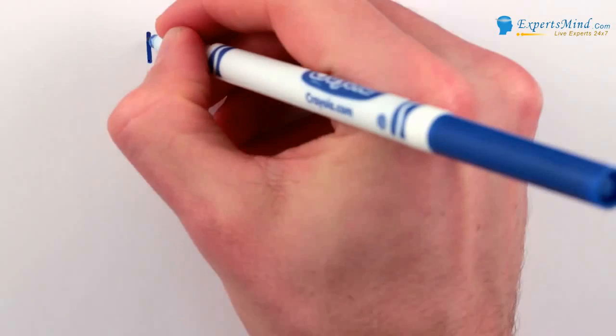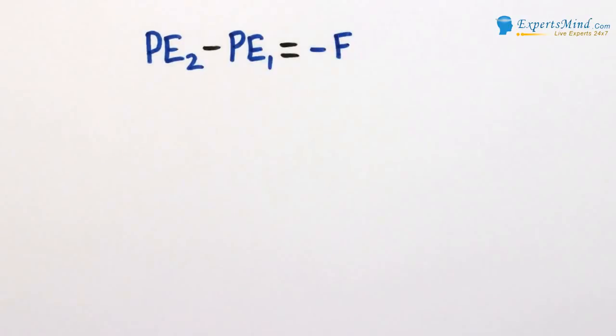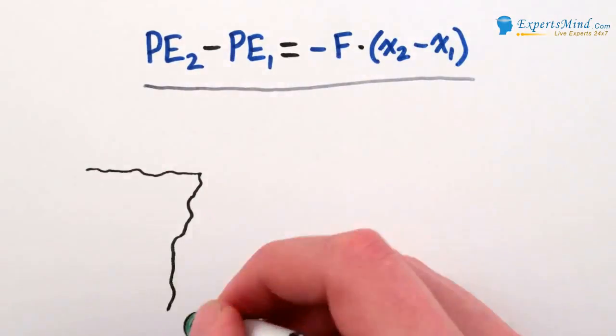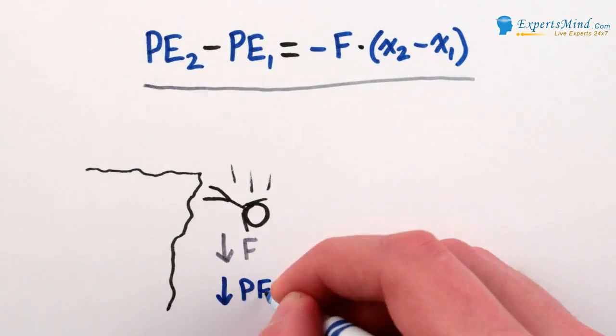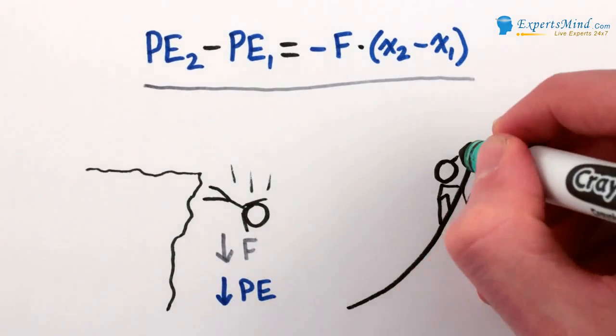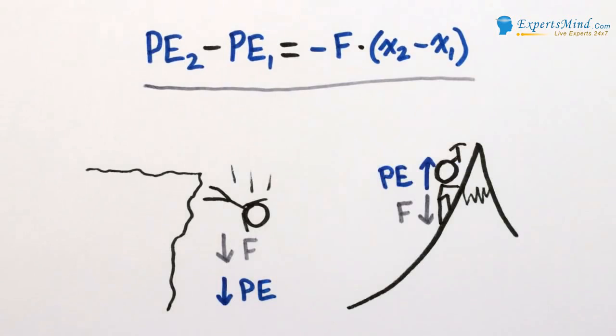Anyway, this is all just to say that the change in potential energy is negative F times the change in position. The negative comes from the fact that if you let the force push you along, your potential energy decreases, while if you fight in opposition to the force, your potential energy increases.